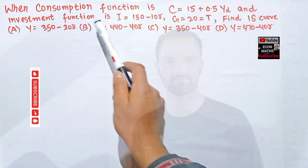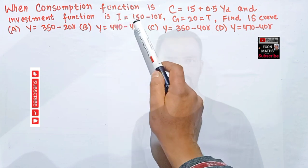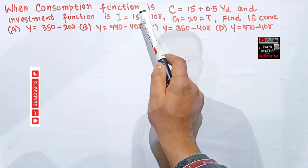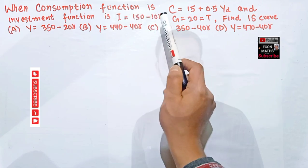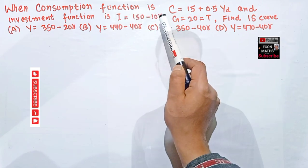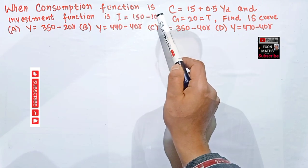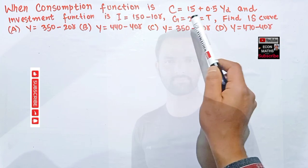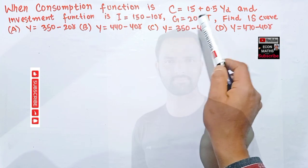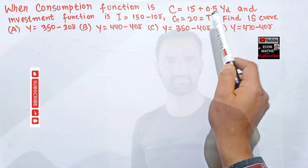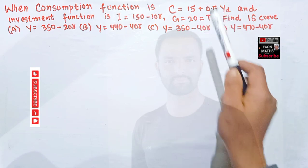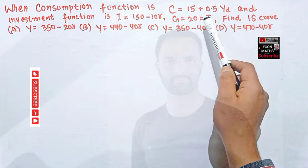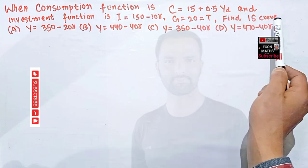The investment function is given as I = 150 - 10r, where 150 is autonomous investment that does not depend upon the level of interest rate. We are also given that government expenditure G = 20, which is equal to the tax T — a lump sum tax that does not depend upon the level of income. We have to find the IS curve.